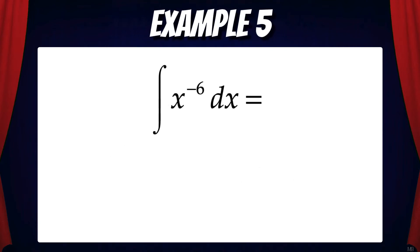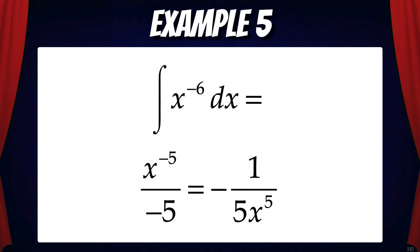Negative exponents? No problem. Let's reverse the power rule — add 1 to the exponent and divide by the new exponent. So the integral of x^(−6) dx equals x^(−5) / (−5), which is the same as −1/(5x⁵).